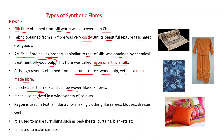Rayon is used in textile industries for making clothing like sarees, blouses, trousers, socks, etc. It is used to make furnishings such as bed sheets, curtains, blankets, and also carpets. You can see in this diagram: carpet, bed sheet, curtain, pillow cover, and dress material.